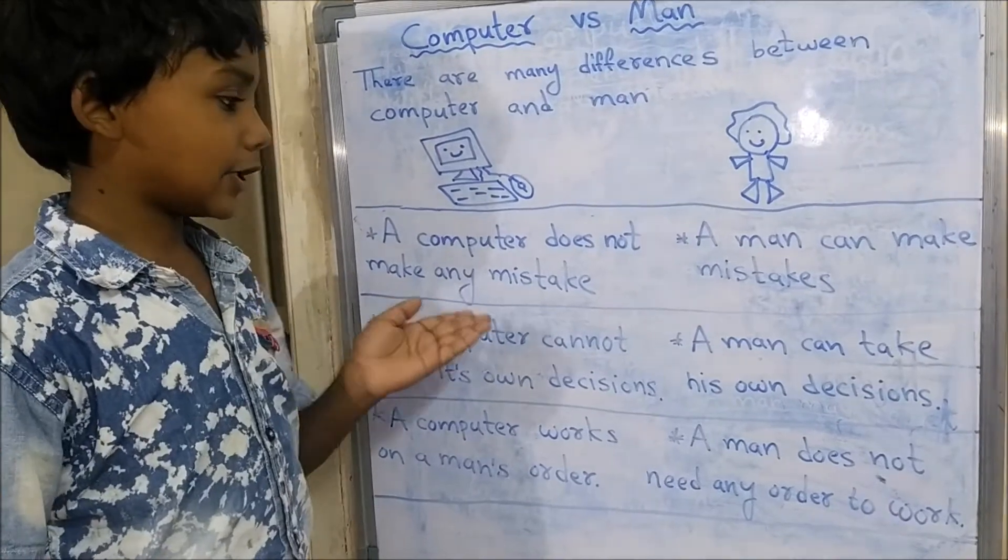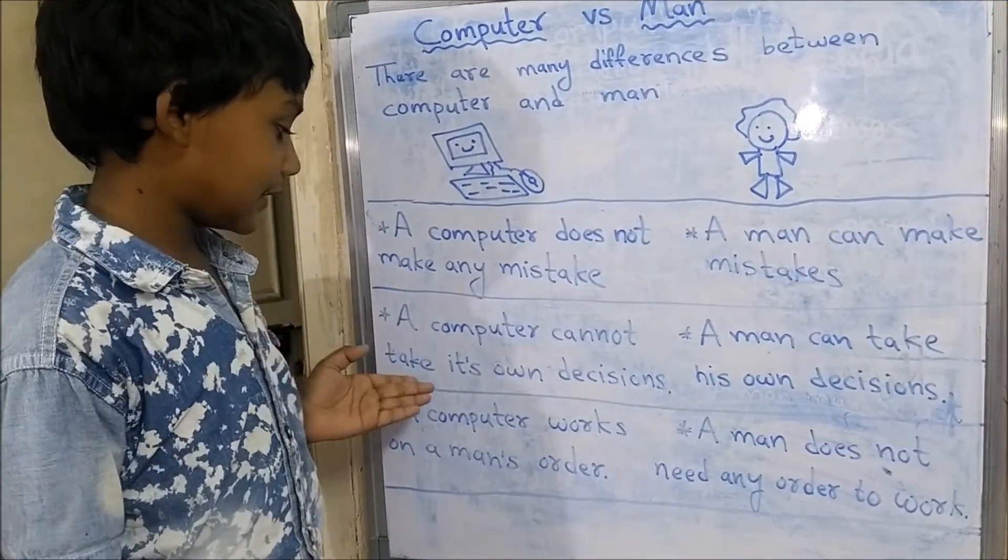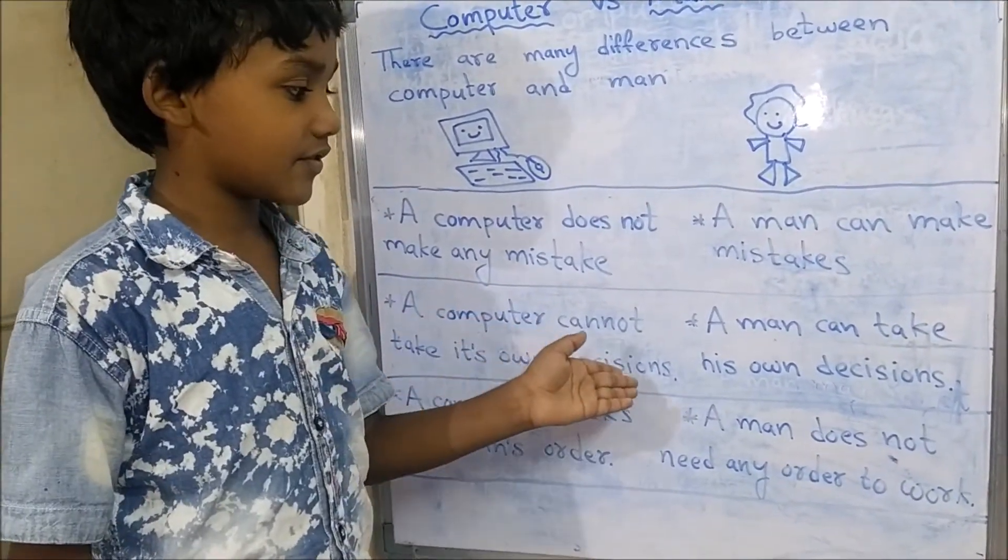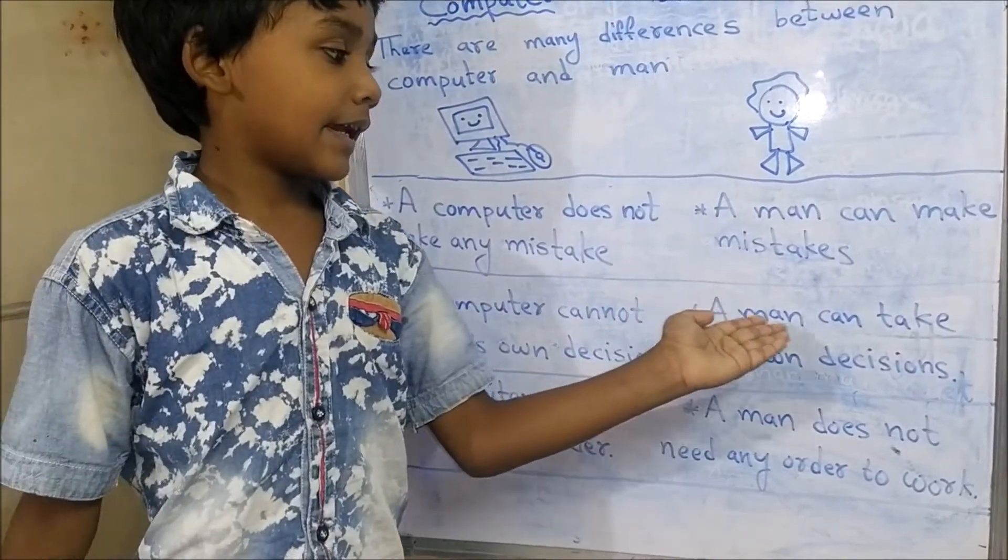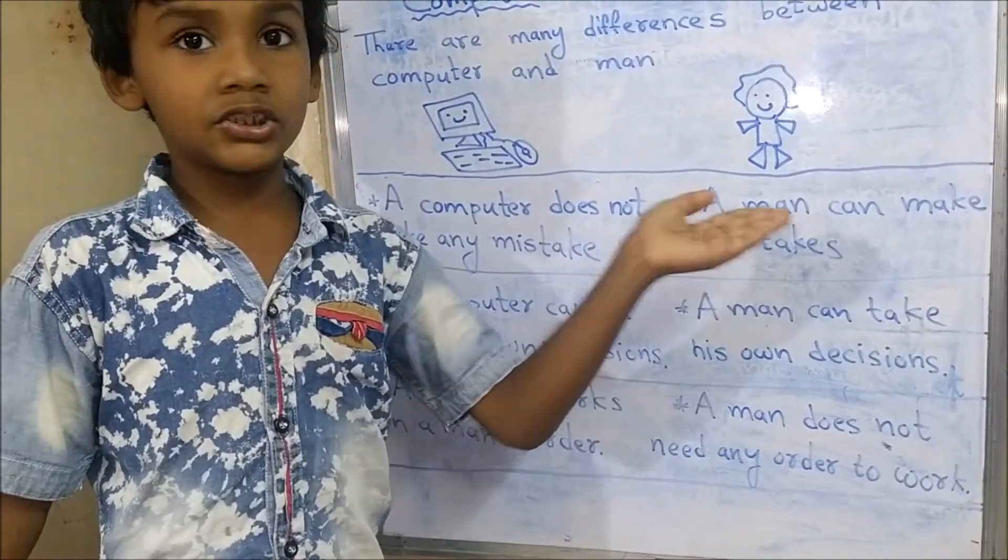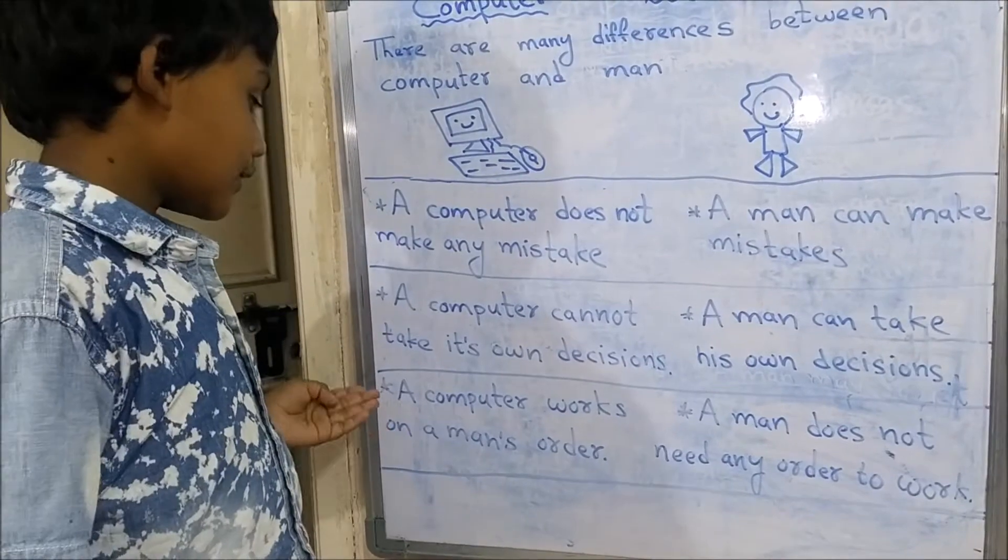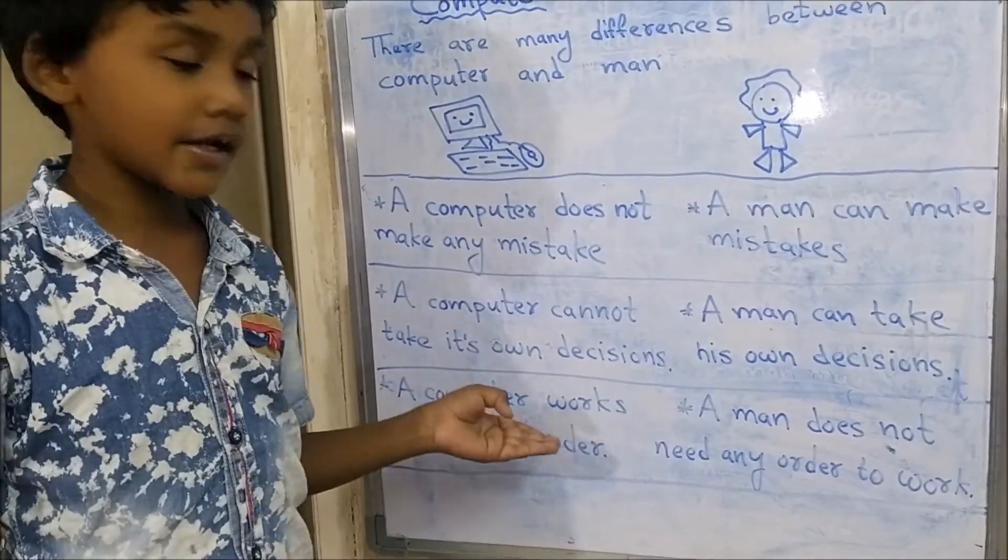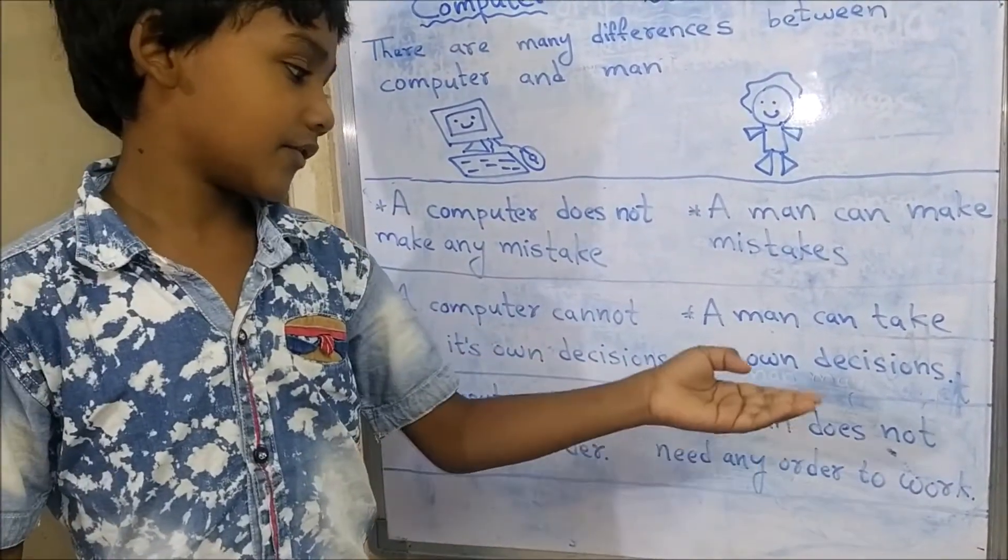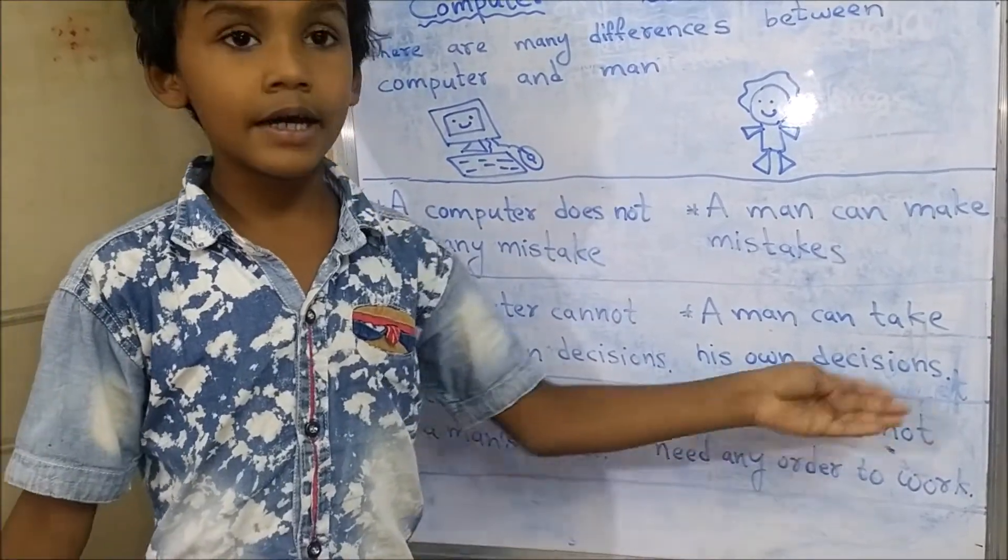A computer cannot take its own decisions. A man can take its own decisions. A computer works on a man's order. A man does not need any order to work.